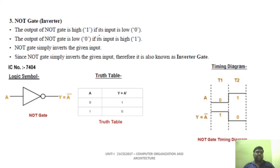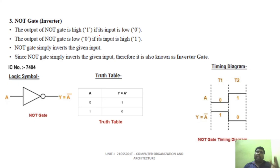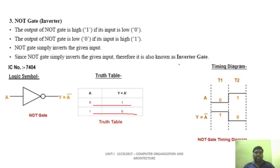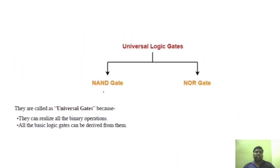The next basic gate is the NOT gate. The NOT gate is also called the inverter gate. It is very simple — whatever the input is, the output is the opposite. The NOT gate has only one input. If the input is 1, you will get 0. If the input is 0, you will get 1. This is called the NOT gate or inverter gate.